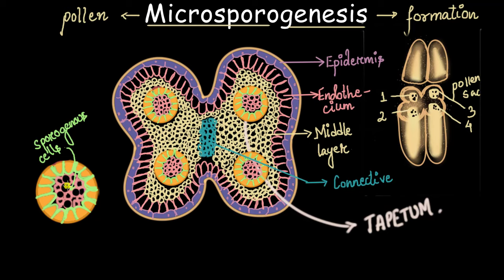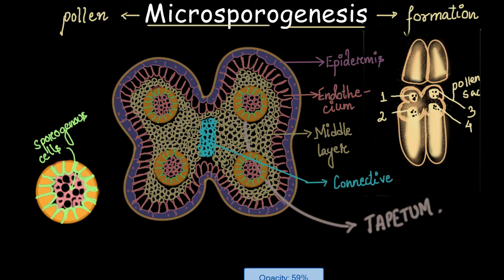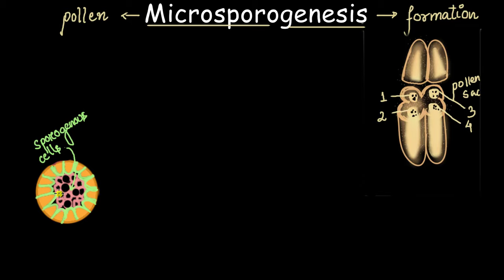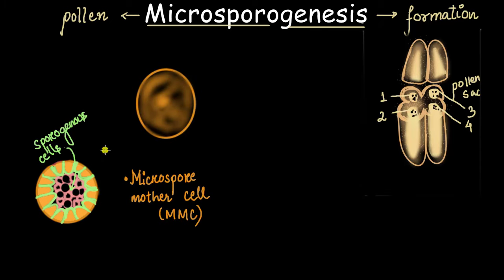This part is the most important part of the entire video because a lot of exam questions are asked from here. From here on, this sporogenous cell will develop into a microspore. Among the few cells left inside this tapetal layer, let's bring one of them out. This cell from the sporogenous cell mass is called the microspore mother cell, because it gives rise to microspores.